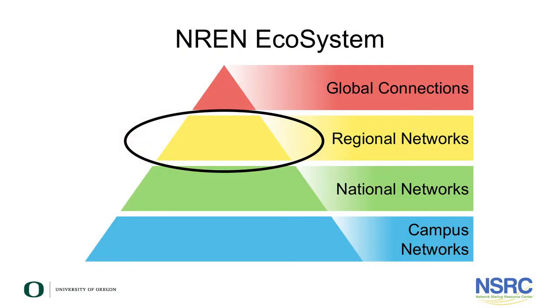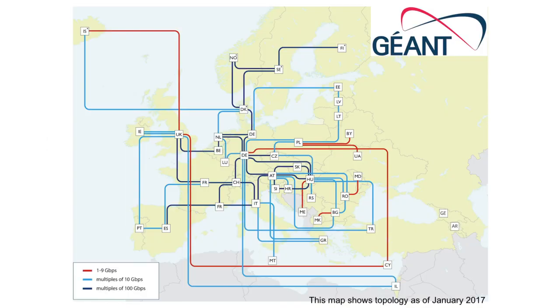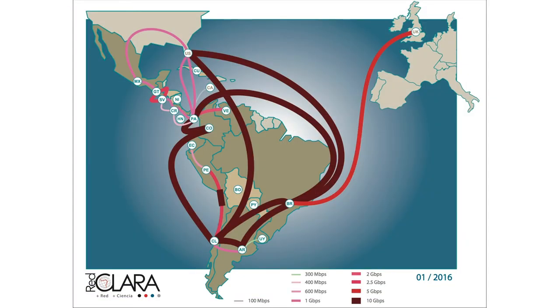Now let's talk about regional networks. The regional networks are networks that connect the national research and education networks in a specific geographic region. Many of these regional networks have been developed with funding from the European Union. There are quite a number of regional RENs. This is GEANT, the pan-European network that serves most of the countries in Europe. And this is TANE that serves much of Asia along with Australia and New Zealand. And REDCLADA that serves South and Central America.